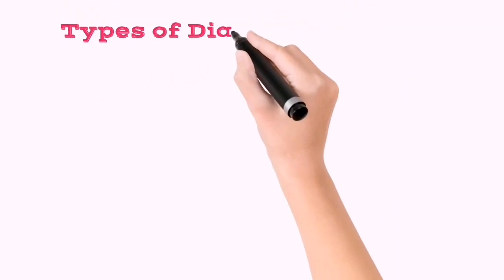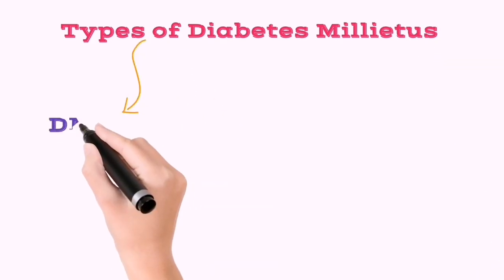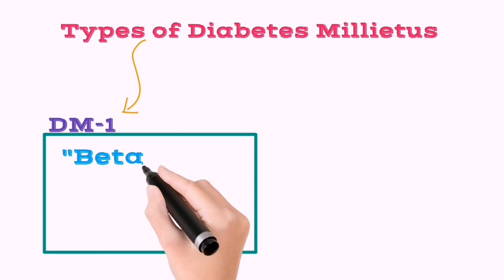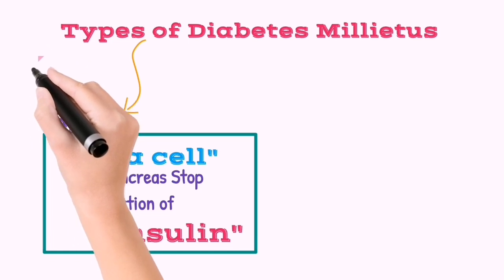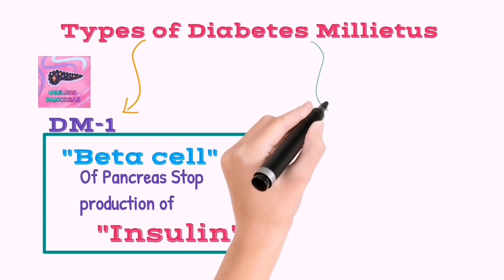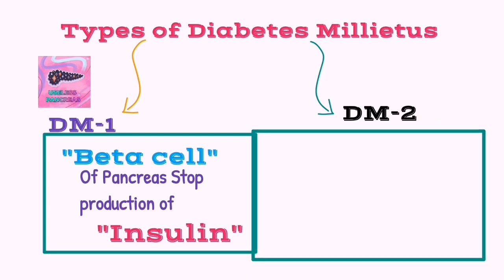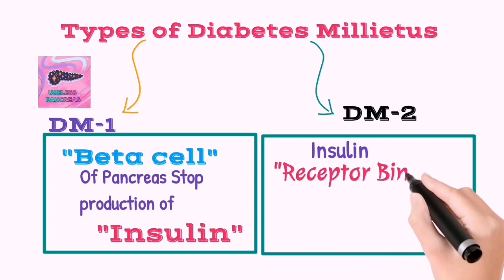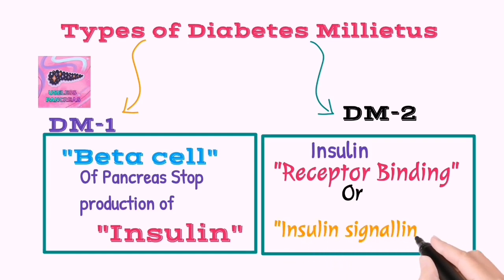Let's talk about the types of diabetes mellitus. There are two main types. First is diabetes mellitus type 1, in which the beta cells of the pancreas stop production of insulin hormones due to destruction of the beta cells, which may be for genetic reasons or some other reasons. Secondly, diabetes mellitus type 2 — in this type, insulin is produced by the beta cells but doesn't work because of insulin receptor binding or insulin signaling problems.